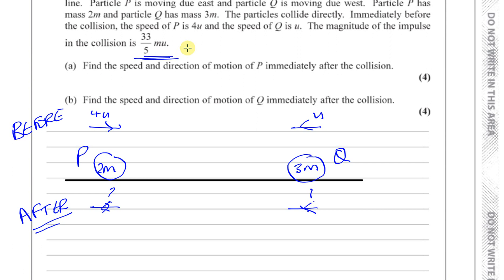So for P, you've got to decide which side is positive. I'm going to take this direction as positive. If I take that direction as positive, then the impulse exerted on P is going to be in this direction. The impulse is what causes it to change its direction. So the sign of the impulse is minus 33 over 5 mu. That's the magnitude and the sign of the impulse.